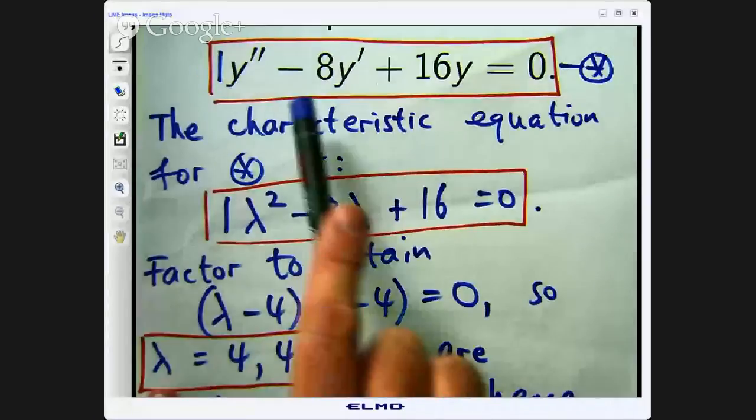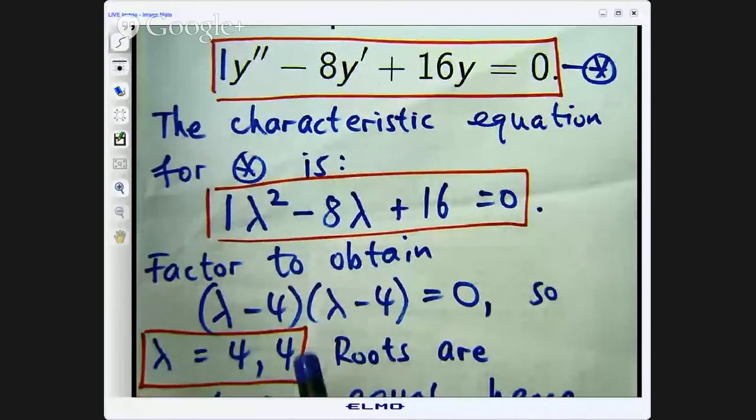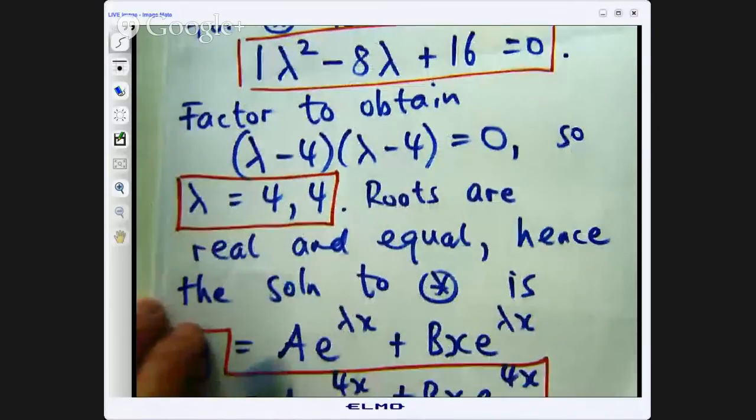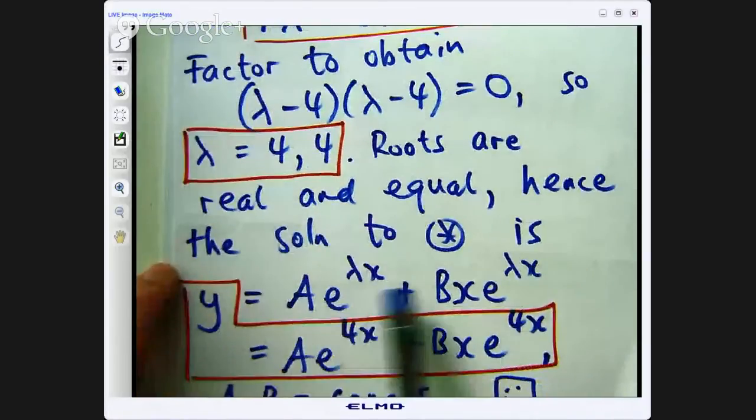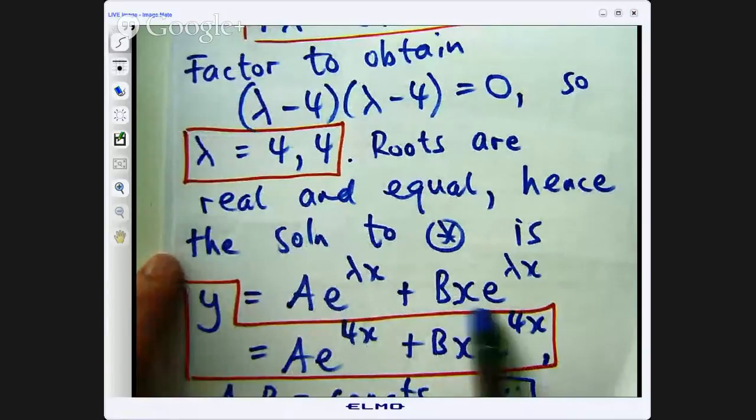So let me show that to you. We wrote down our characteristic equation, we factored it, the roots were real and equal, and then the solution was this combination of this exponential and this x times the exponential.